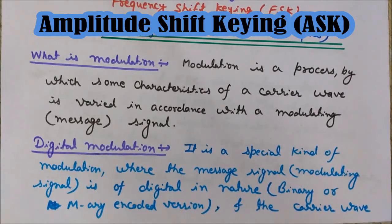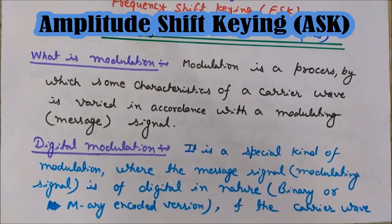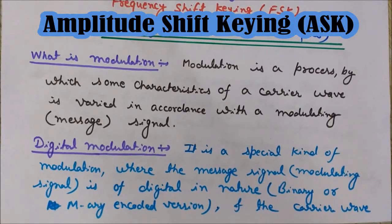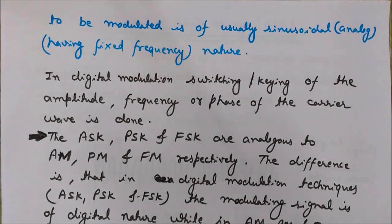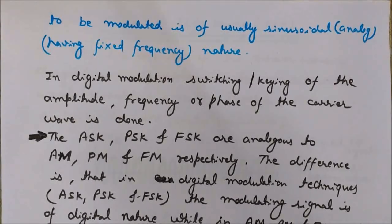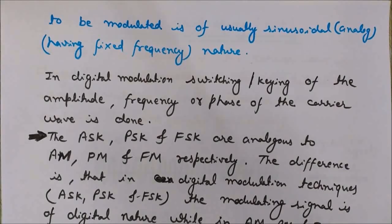The difference between analog and digital modulation is based on the message signal. In analog modulation, the modulating signal is of analog nature, but in digital modulation, the modulating signal is of digital nature. We may use binary or M-ary encoded versions. In M-ary encoding, instead of transmitting one bit at a time, we transmit two or more bits at a time, which reduces bandwidth. The carrier wave in digital modulation is analog and sinusoidal. In ASK, PSK, and FSK, this is known as the switching or keying of the amplitude, frequency, or phase of the carrier wave as per the message signal.